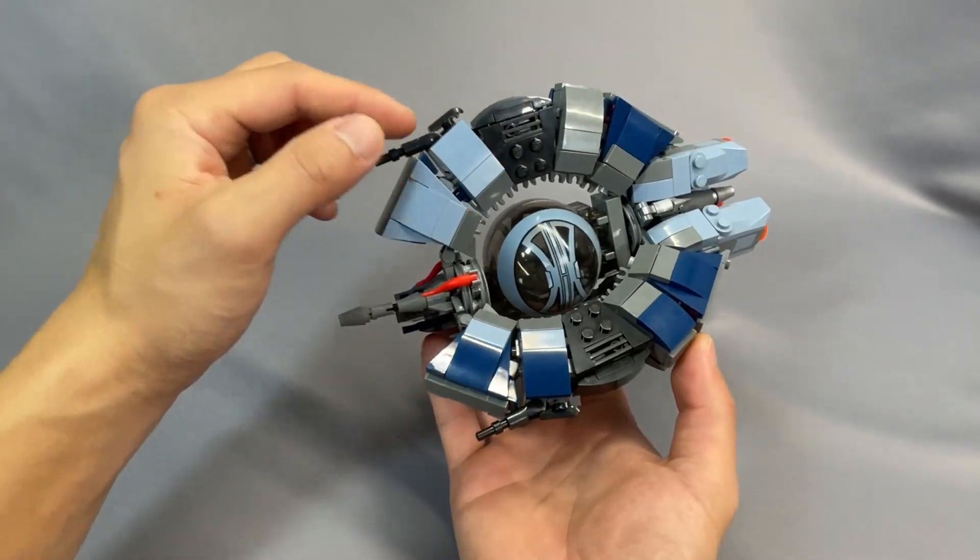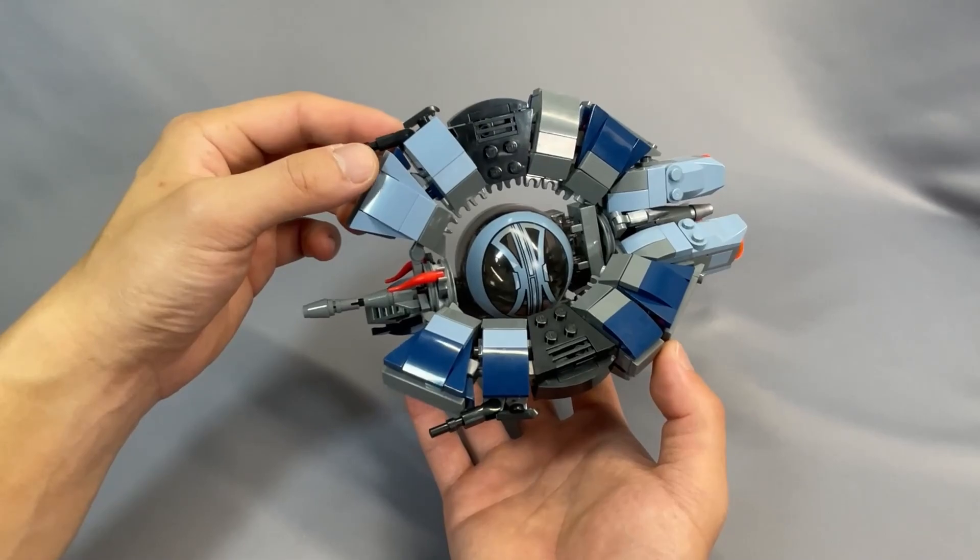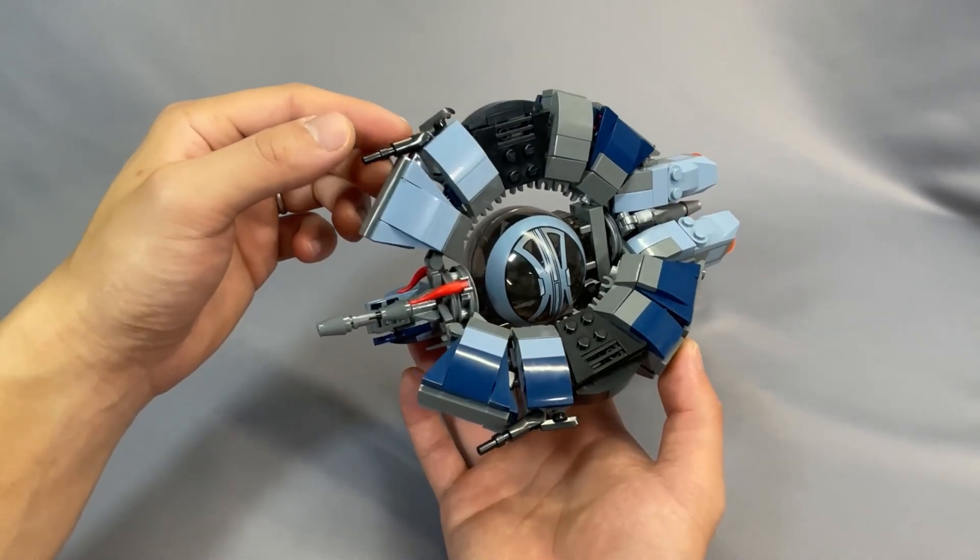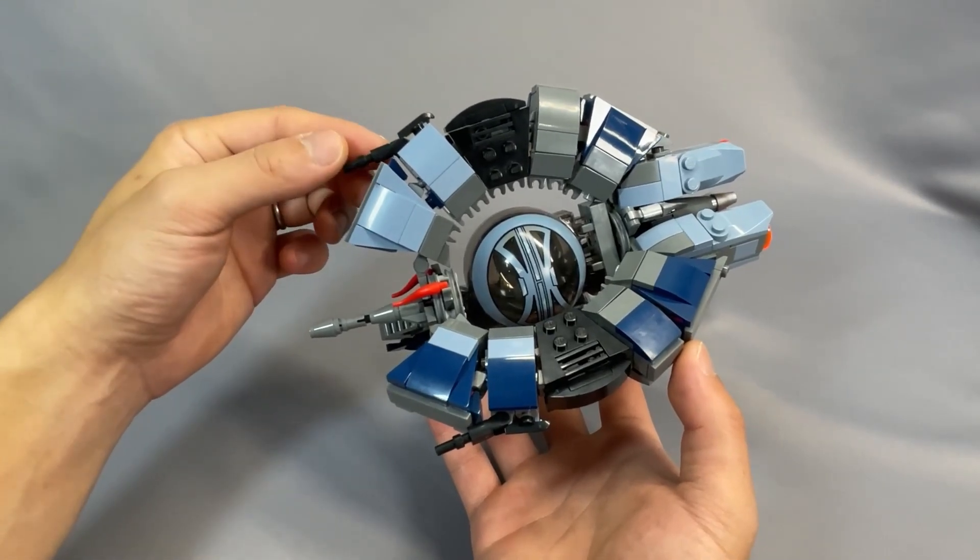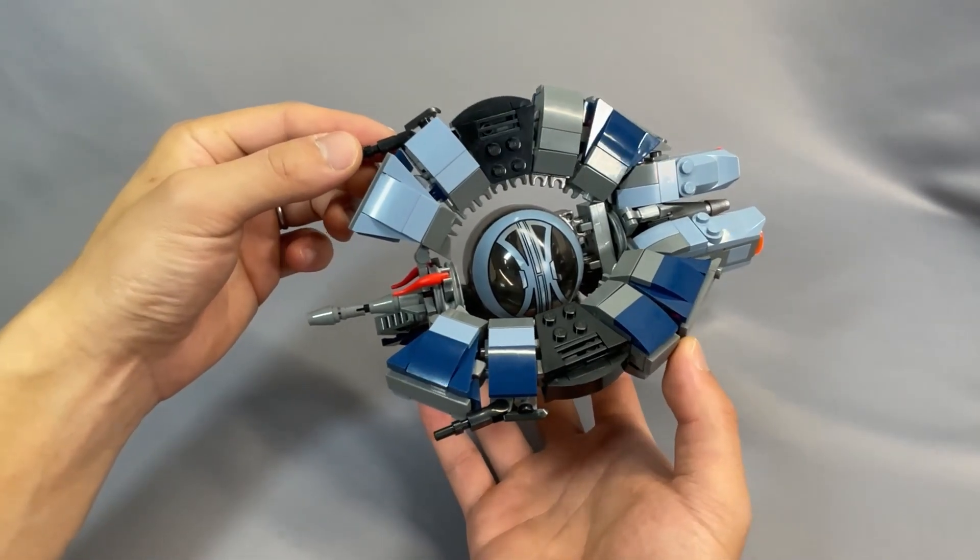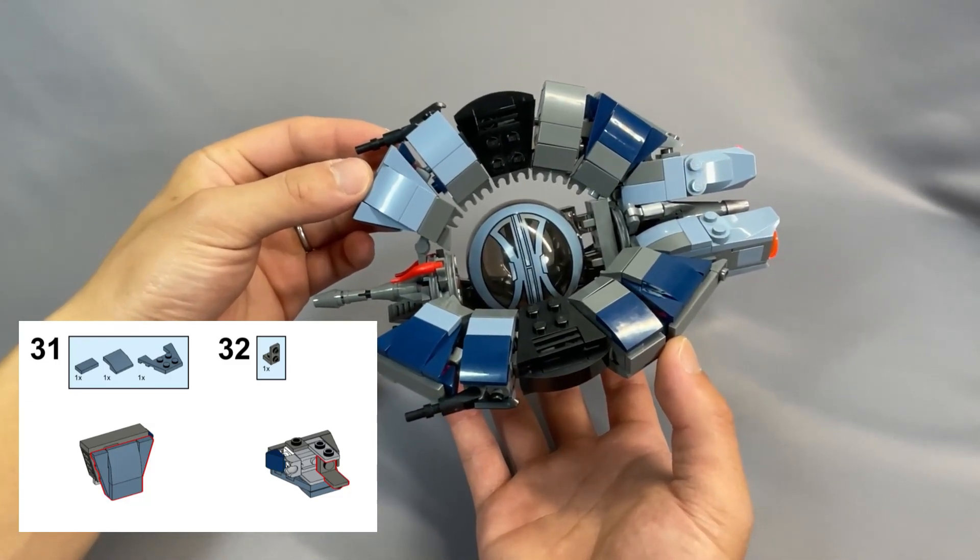Throughout the process of building the curved sections, the instructions have you inserting brackets in between pieces that are already in place, meaning you have to remove the pieces you previously connected to continue. These brackets should be added in the previous subassembly. For example, in step 32, you need to move the wedge you installed in step 31 to get this bracket in place.